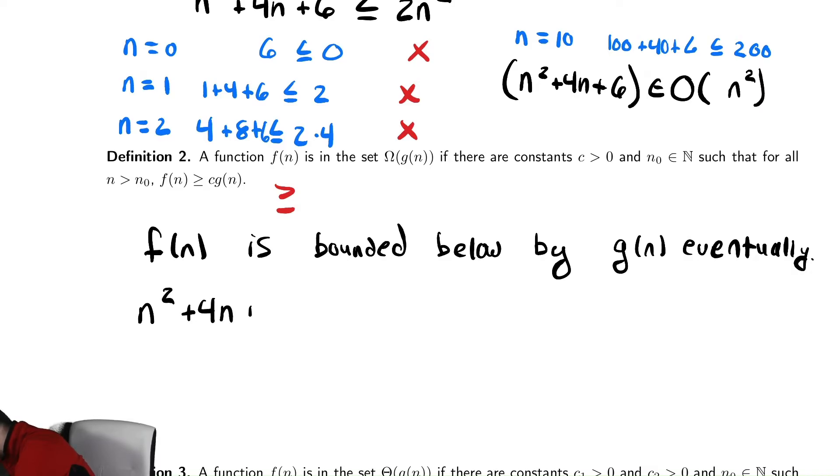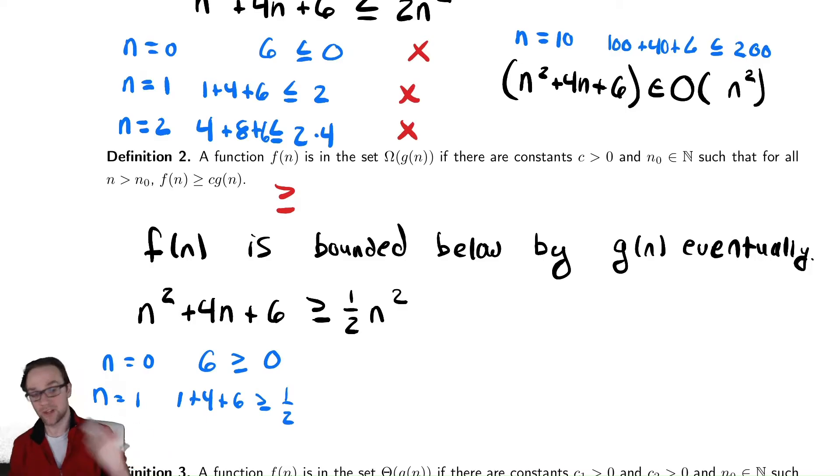As an example, n² + 4n + 6 is greater than or equal to ½n². If you plug in n = 0, you get 6 ≥ 0. That seems to check out. n = 1, here you get 1 + 4 + 6 ≥ ½. Also seems to check out, and you can keep going and show that this works forever. If you wanted to formally prove this, you could do so with induction. We will have some other techniques for developing constants that will allow us to avoid that.